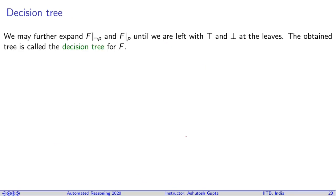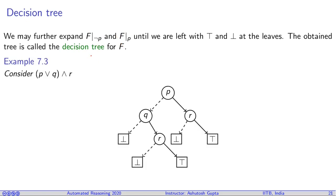Now we can further extend this idea and turn this to a decision tree. We will further expand these objects projected on not P and P until we are left with true or false at the leaves. The updated tree is called decision tree, which looks like this.